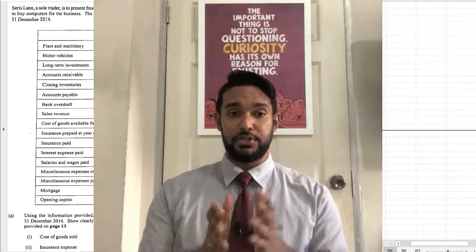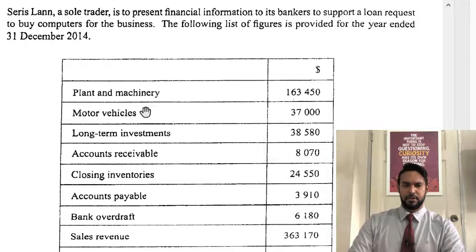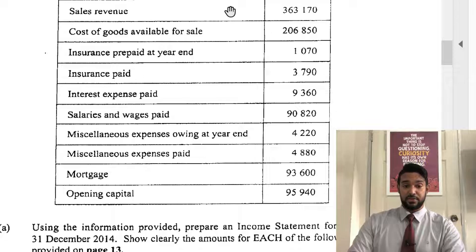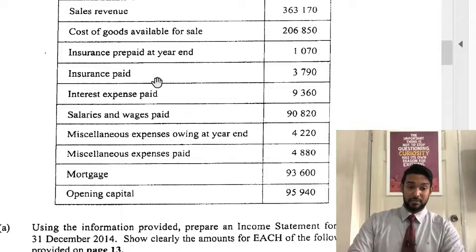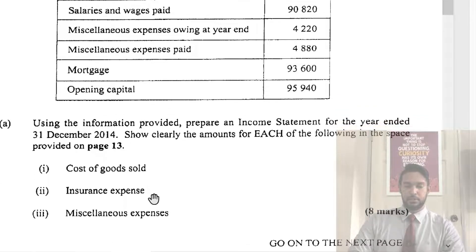We have one more question to do, which is Cereslan. Cereslan is a sole trader presenting financial information to its bankers to support a loan request to buy computers for the business. The following list of figures is provided for the year ended 31st December 2014. Plant and machinery, motor vehicles, long-term investments, accounts receivable, closing inventories, accounts payable, bank overdraft — everything there is for the balance sheet. Then we have sales revenue, cost of goods available, insurance prepaid, insurance paid, interest expense paid, salaries and wages paid, miscellaneous expense owing at year end, miscellaneous expense paid. Mortgage as a long-term loan and capital at start. They want: income statement for the year ended December 31, 2014, showing clearly cost of goods sold, insurance, and miscellaneous expenses.